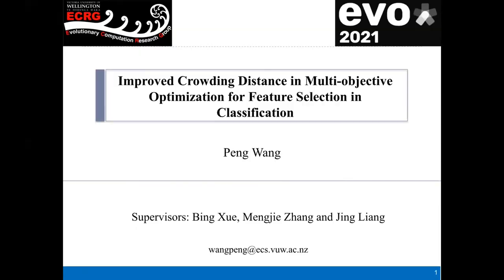Sorry for the time. My name is Peng, and my supervisors are Professor Bing Meng and Jing. I came from Victoria University of Wellington. The topic of my presentation is Improved Crowding Distance in Multi-Objective Optimization for Feature Selection in Classification.